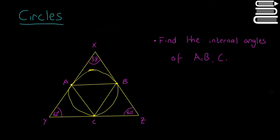Welcome back. Now we're going to attempt our last question on circles before we move on to transformations and enlargements. We have this big triangle here, X, Y, Z, and there's also a circle inside it that just about touches each of the sides. It touches the points at A, B, and C.